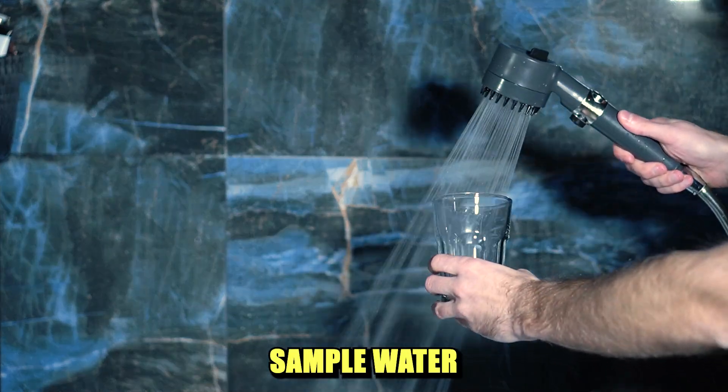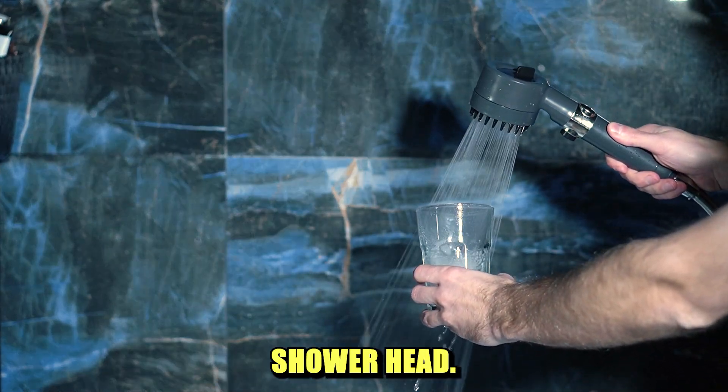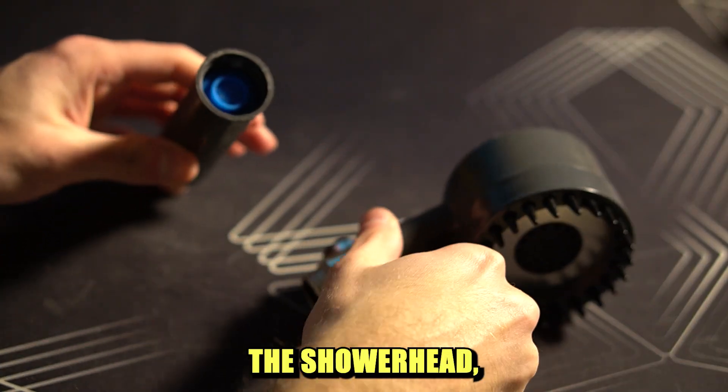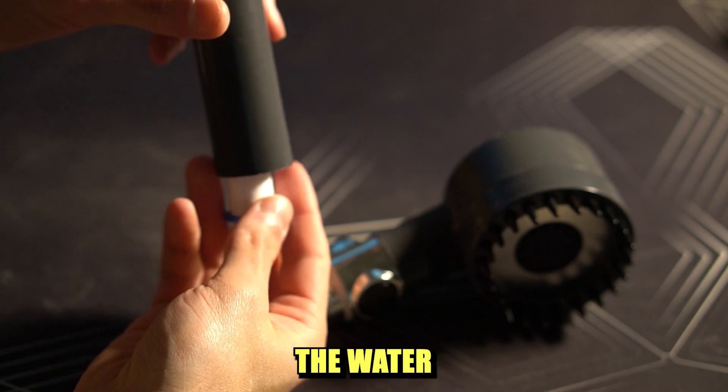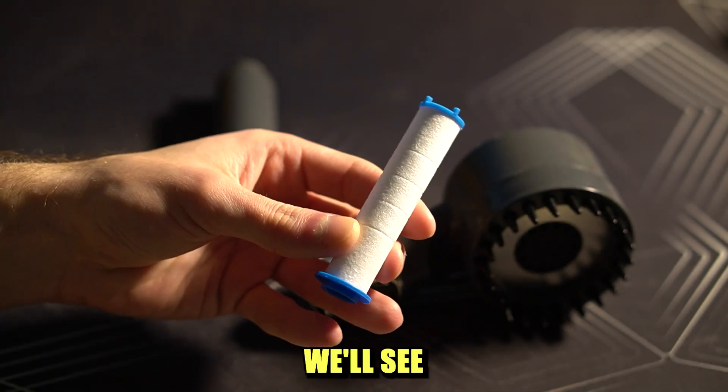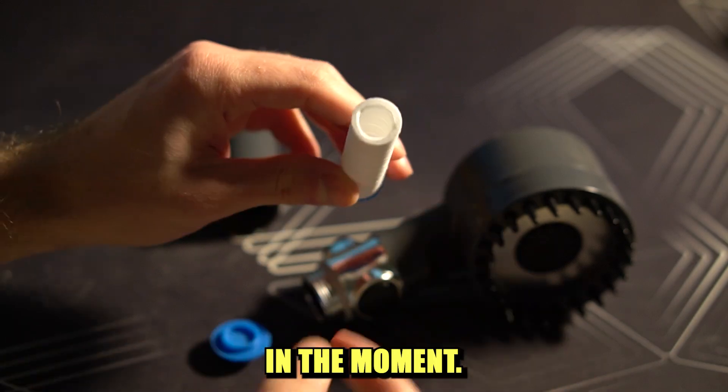Secondly, I'm going to sample water that's been filtered by this shower hat. The thing is that there is a filter inside the shower hat and it supposedly can clear the water from heavy metals, chlorine, microplastics, etc. We'll see if it's actually any good in a moment.